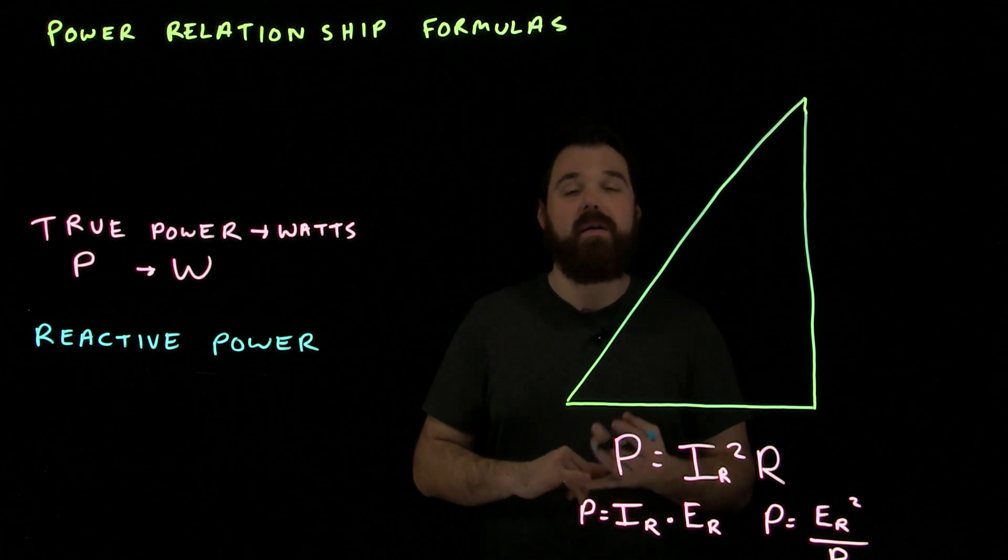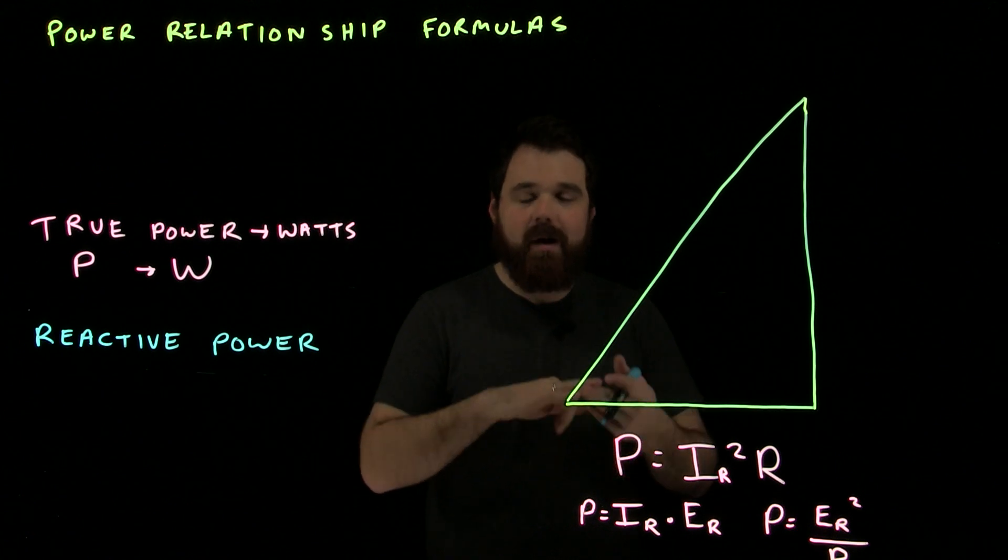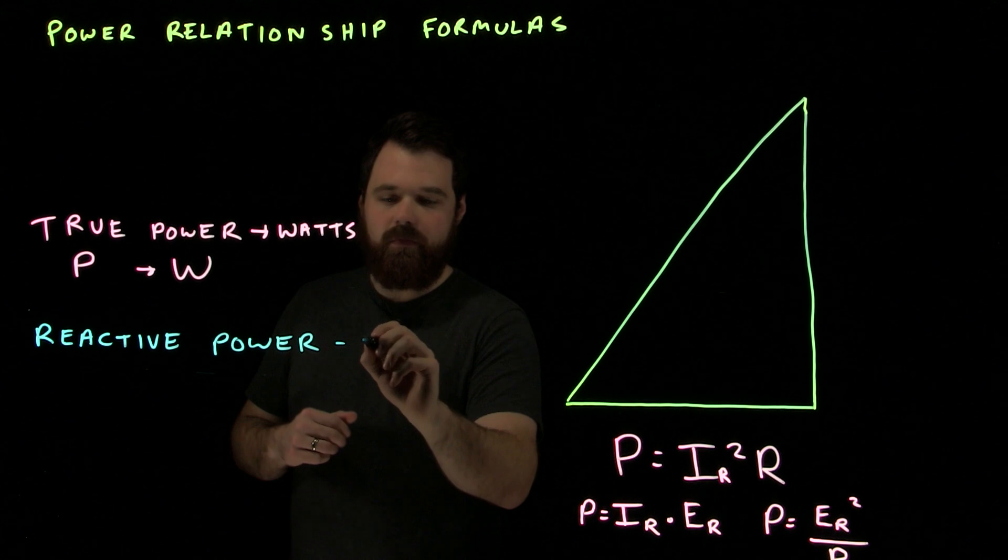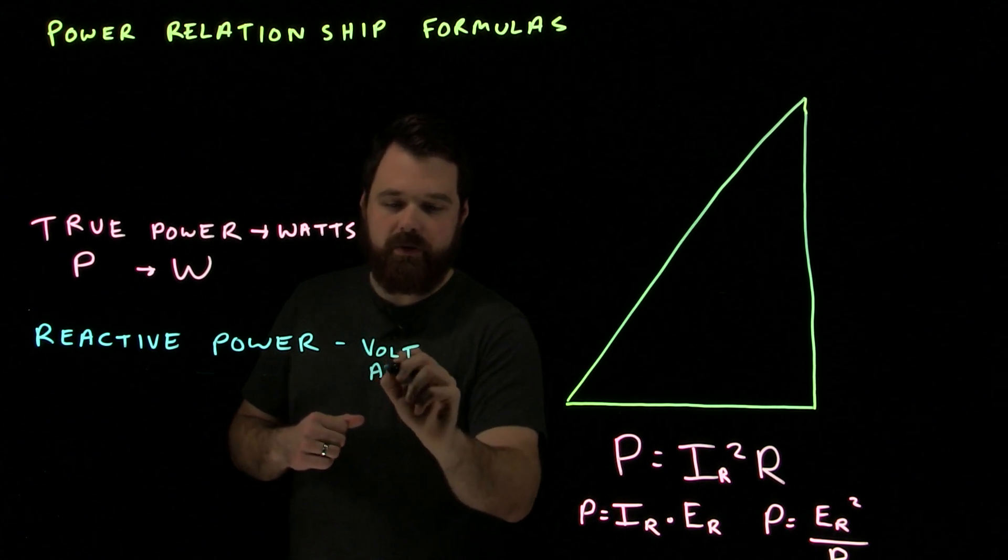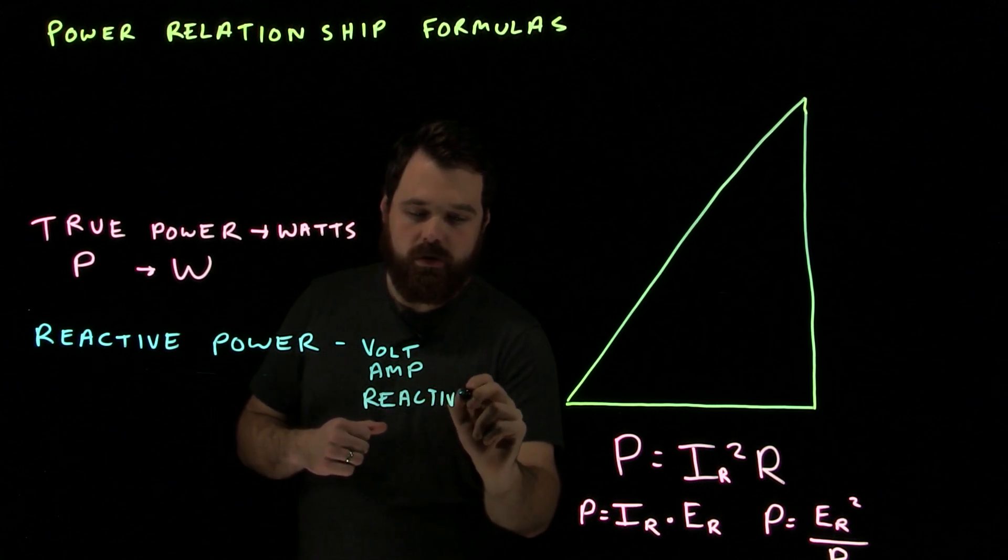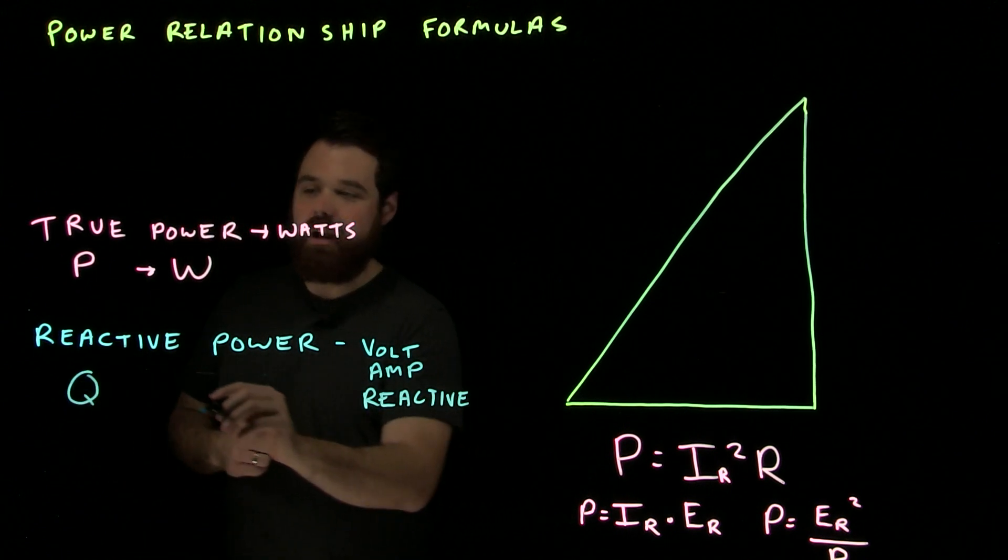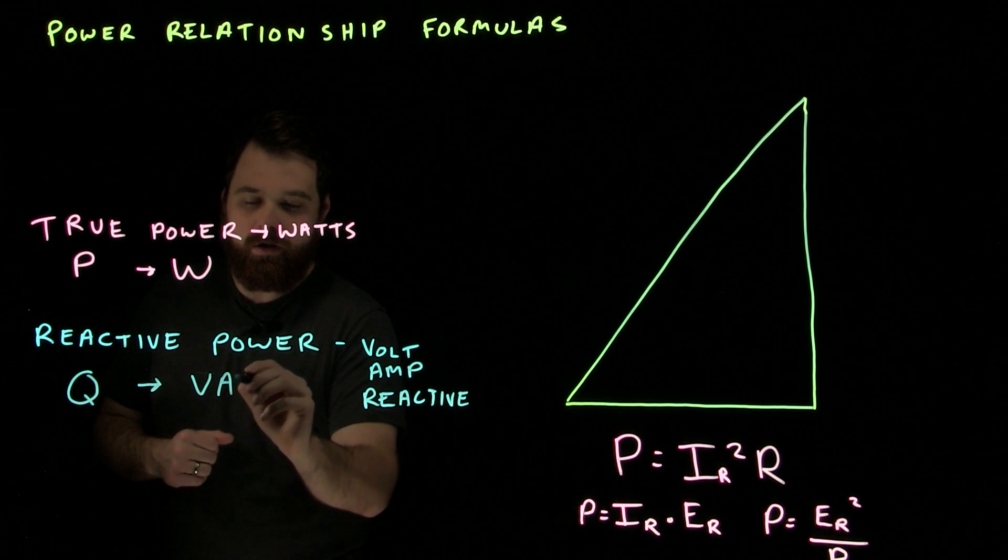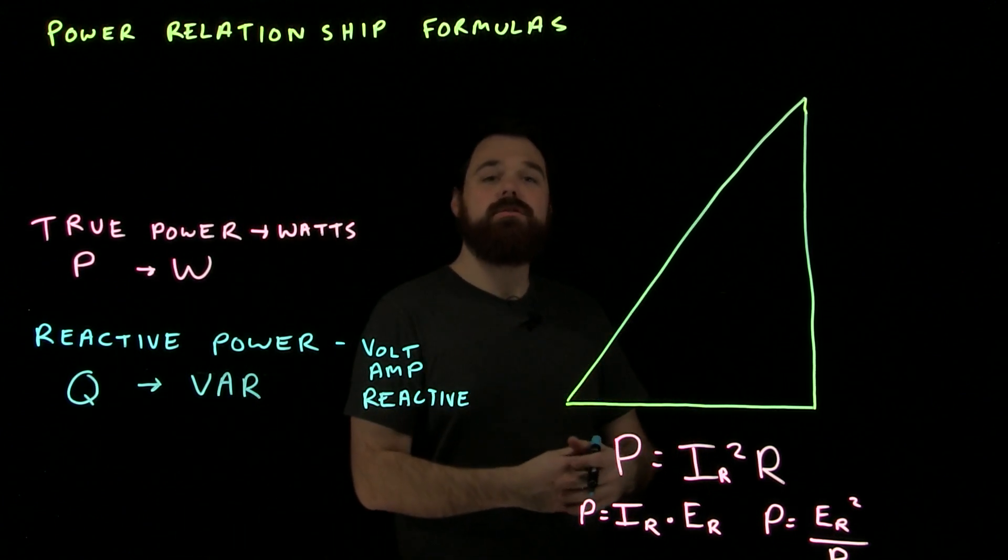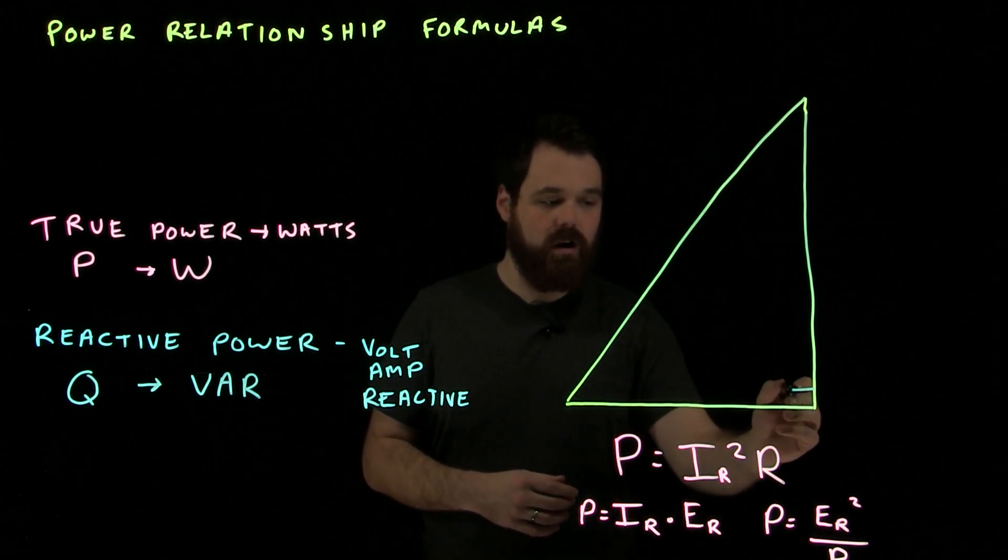Reactive power we can call quadrature power, wattless power, out-of-phase power are some of the common names for it. It is actually measured in volt-amp-reactive. So, what we do is we call it Q is the symbol, and we say it is measured in VAR, volt-amp-reactive. Because this is occurring due to capacitance and inductance in a circuit, we see it 90 degrees out of phase here on our right-angle triangle.